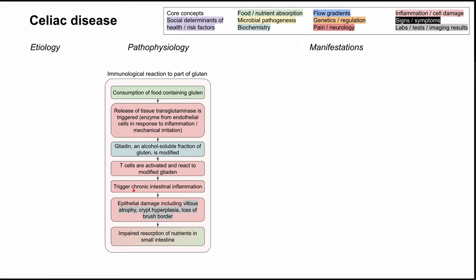Some of the things you might see on pathology, or keywords to know for celiac disease, are the damage caused by the chronic intestinal inflammation. This includes villus atrophy, crypt hyperplasia, and loss of the brush border in the intestine. All of this results in impaired resorption of nutrients in the small intestine.